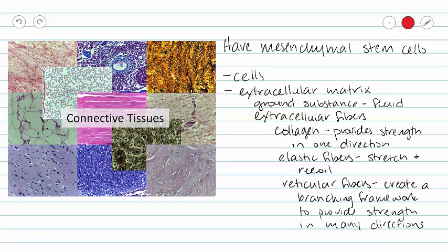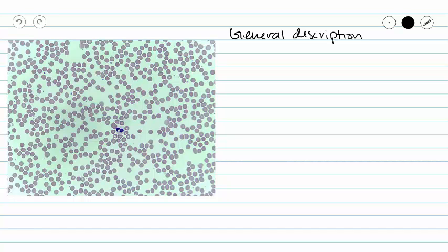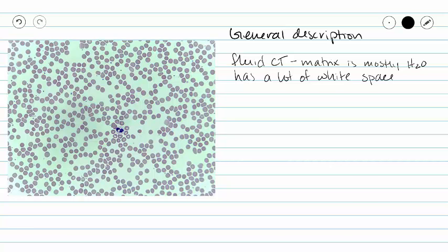Our last connective tissue to cover is blood. Blood is unique when it comes to connective tissues because it is a fluid connective tissue. Because it is a fluid, our extracellular matrix is primarily made out of water. Blood plasma is mostly all water. Because it is so fluid, we have a lot of space in between our cells.